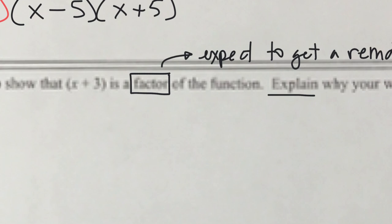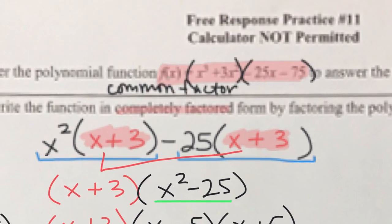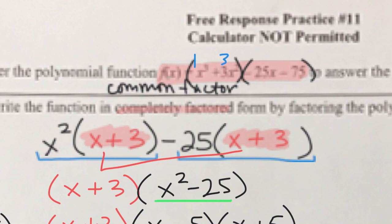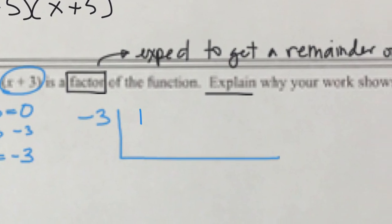We take x plus 3 and set it equal to 0 to find that x equals negative 3, which is the number we'll use in synthetic division. So we do synthetic division on the polynomial — we have 1x³, 3x², minus 25x, and minus 75. Those numbers go into the synthetic division: 1, 3, minus 25, minus 75.